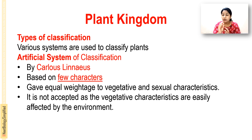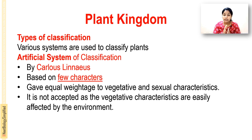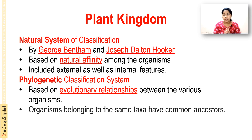The artificial system of classification by Carolus Linnaeus is based on a few observable morphological characteristics like habitat, color, texture, shape, size, and shape of leaves. Equal weight is given to vegetative and sexual characteristics, but it is not accepted because vegetative characters are more easily affected by the environment.